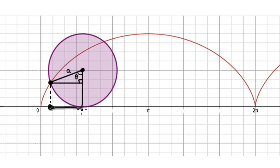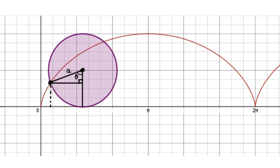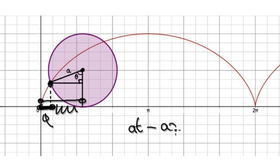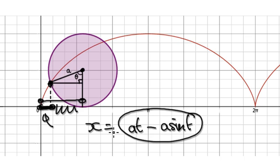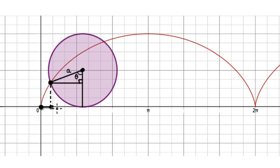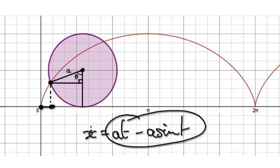Because we're interested in this distance here — we are trying to keep track of point p as it moves along — the width here is the whole length at, and then we take away this bit, which is a·sin(t). So x = at − a·sin(t). As time moves on, x is given by this expression. This would be our first parametric equation.